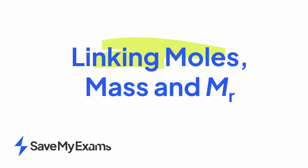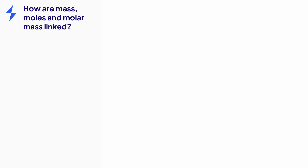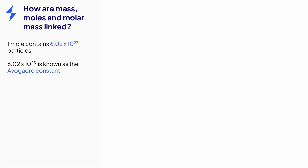This video is on the topic of how to link the number of moles, the mass, and the relative formula mass of a substance. You should remember that the amount of substance is measured in moles, where one mole of a substance contains 6.02 times 10 to the power of 23 particles, and that this number is known as the Avogadro constant. You should also recall that molar mass means the mass of one mole of a substance, and it is measured in grams per mole.